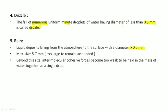The maximum size of rain is 5 to 7 mm. And beyond this size, intermolecular cohesive forces become too weak to be held in the mass of water together as a single drop.